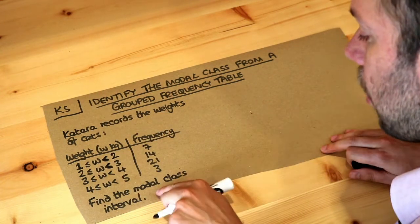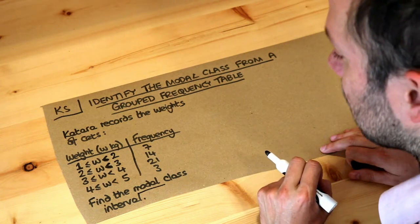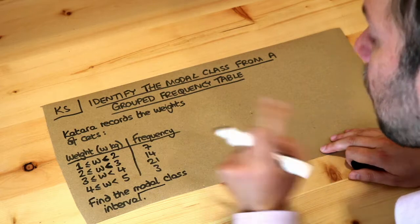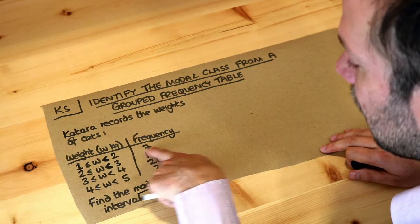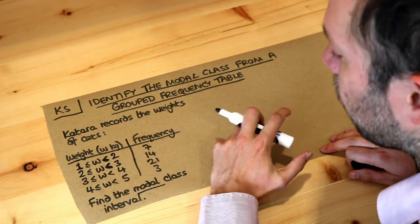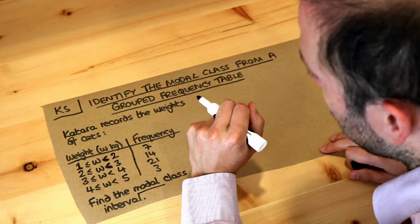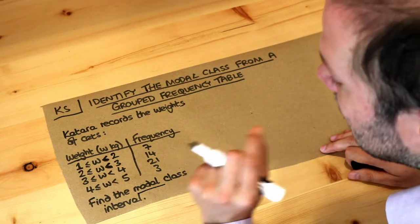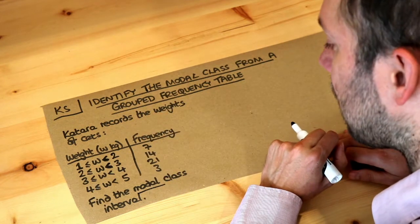We want to find the modal class interval and the word modal sounds a bit like mode, so we're trying to find the mode weight. But the thing is, because we don't know the exact weights of these seven cats, we just know they're somewhere between one and two kilograms, we can't actually find the mode. But we could identify the range where the most cats occur, where the frequency is the highest.